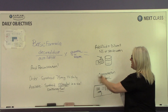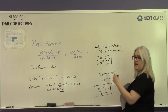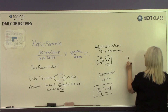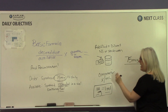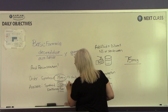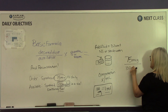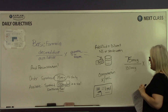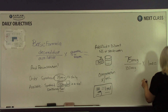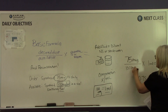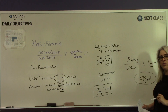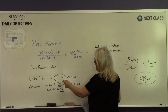Once we understand the concentration, we can plug it into our basic formula. Our desired dose is 75 micrograms, our available dose is 100 micrograms, and our volume is 1 milliliter. You complete the math and get 0.75 milliliters. We know it's milliliters because the micrograms cancel each other out, leaving just milliliters. That is the dose we administer so the patient receives 75 micrograms of medication.